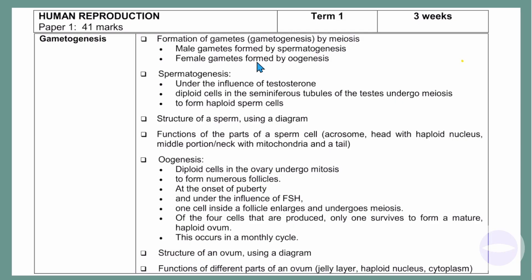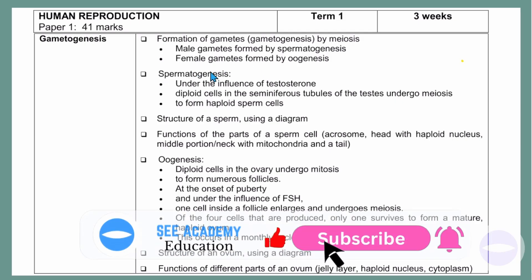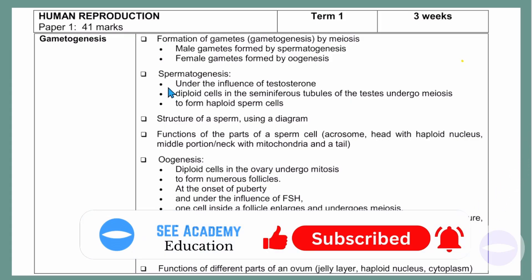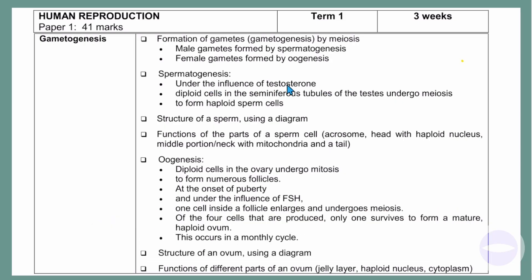Let's start with spermatogenesis, which is the formation of male gametes. The process of spermatogenesis goes as follows: under the influence of testosterone, diploid cells in the seminiferous tubules of the testes undergo meiosis to form haploid sperm cells. When asked during an examination to explain spermatogenesis, you can write in this form and you will get full marks.